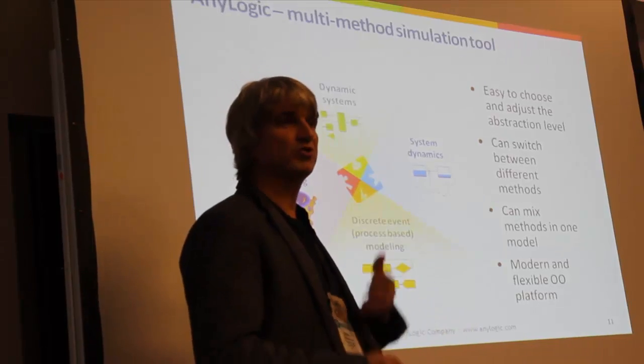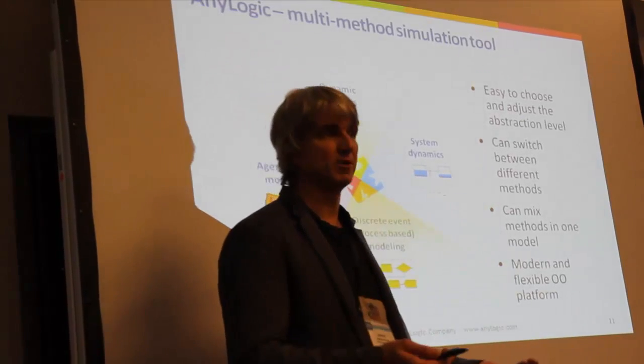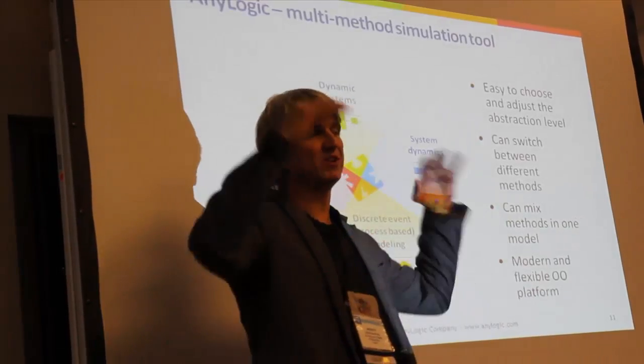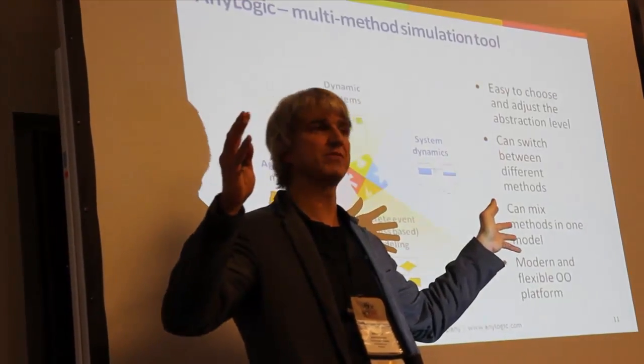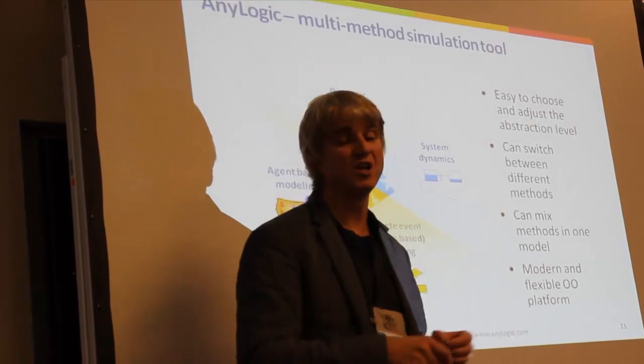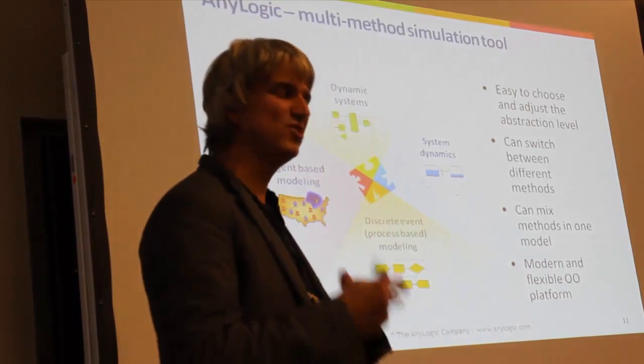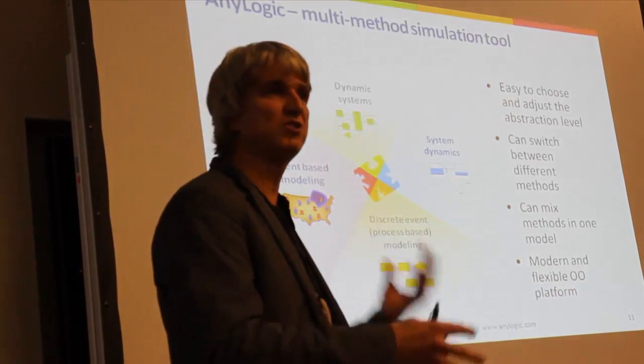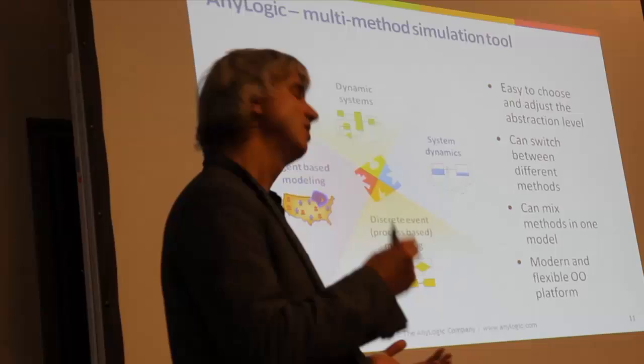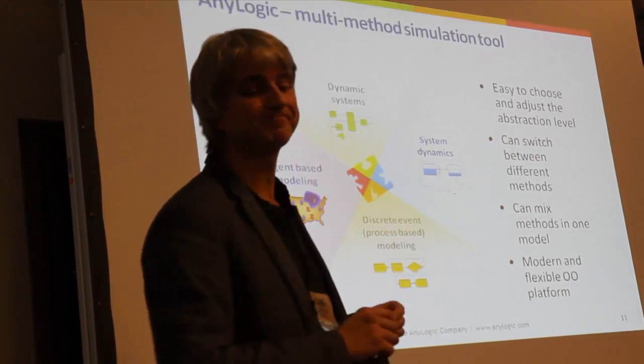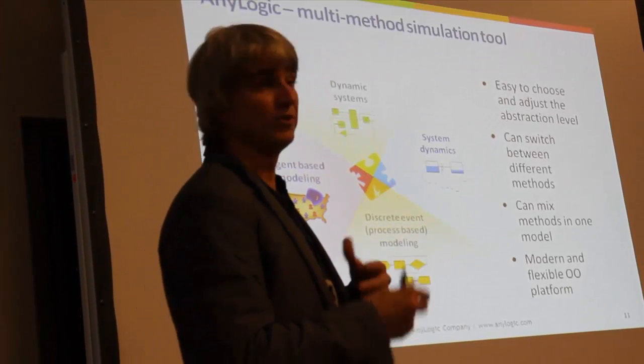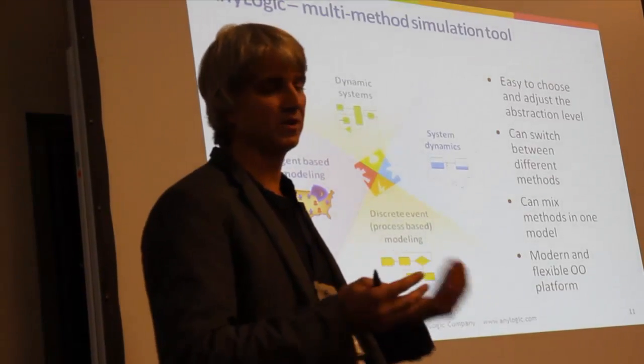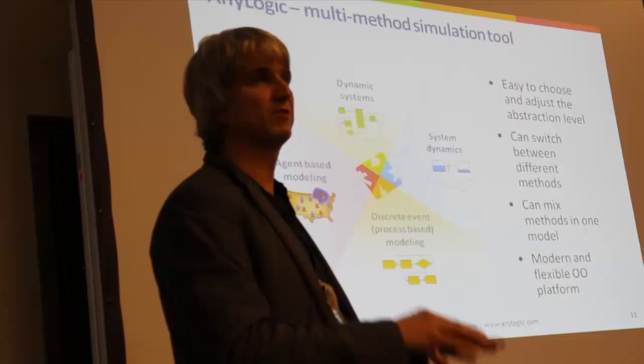You can mix methods and you can switch between methods as you are developing the model. For example, you can start sketching the model as a very high-level system dynamics thing. And then, as you proceed, you may decide, okay, this is not the right level of abstraction. I need to bring more details into the model. I need to have individual properties. Then, you can switch from system dynamics to discrete event or to agent-based, staying with one platform, one tool.